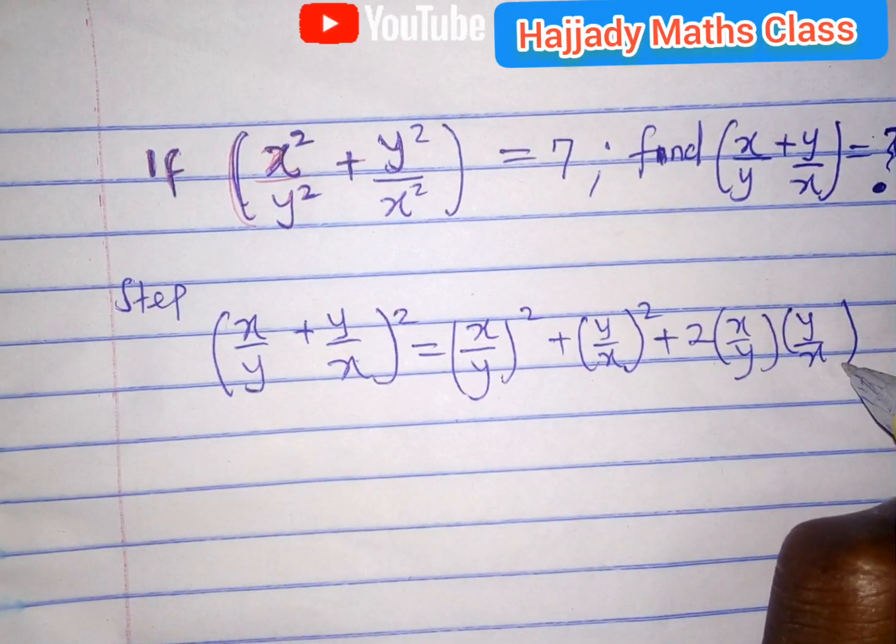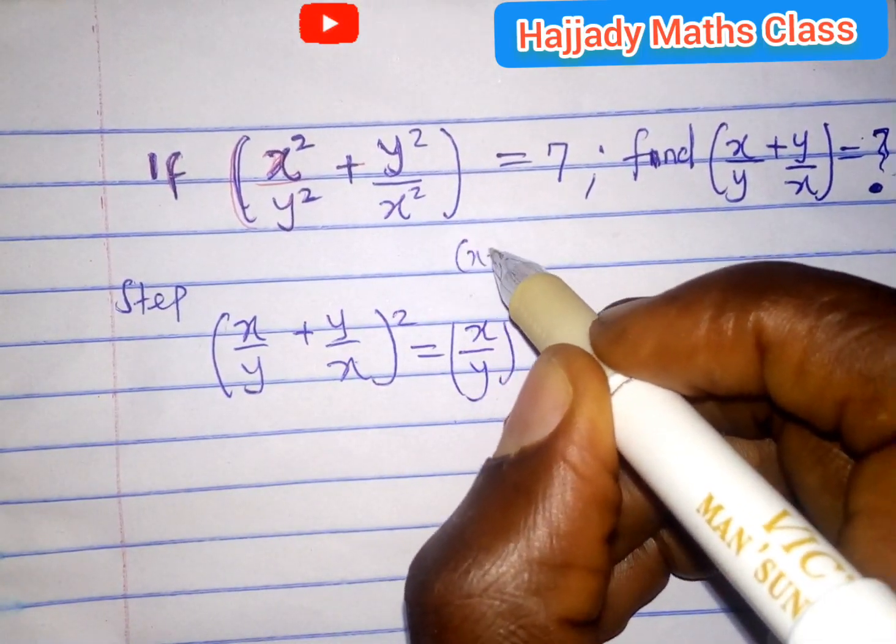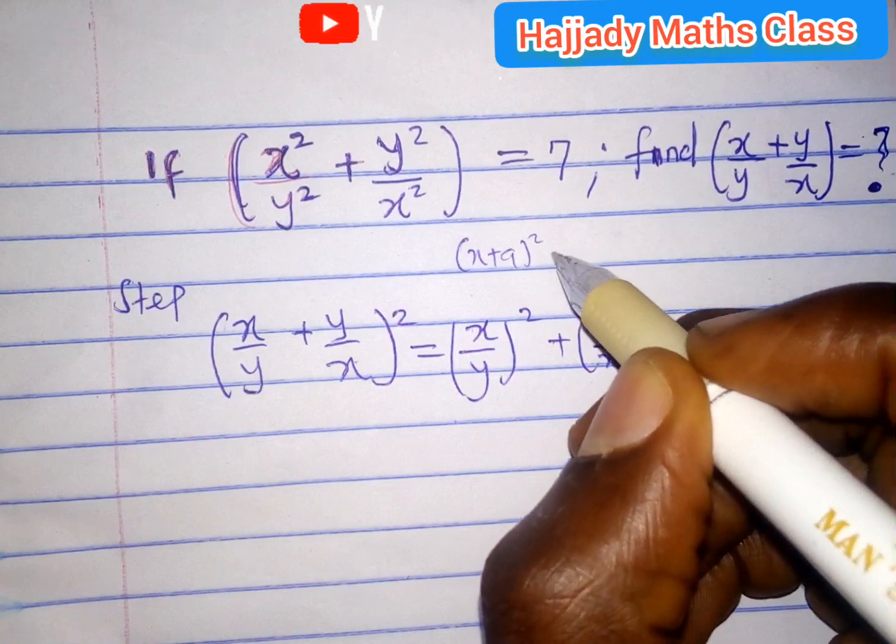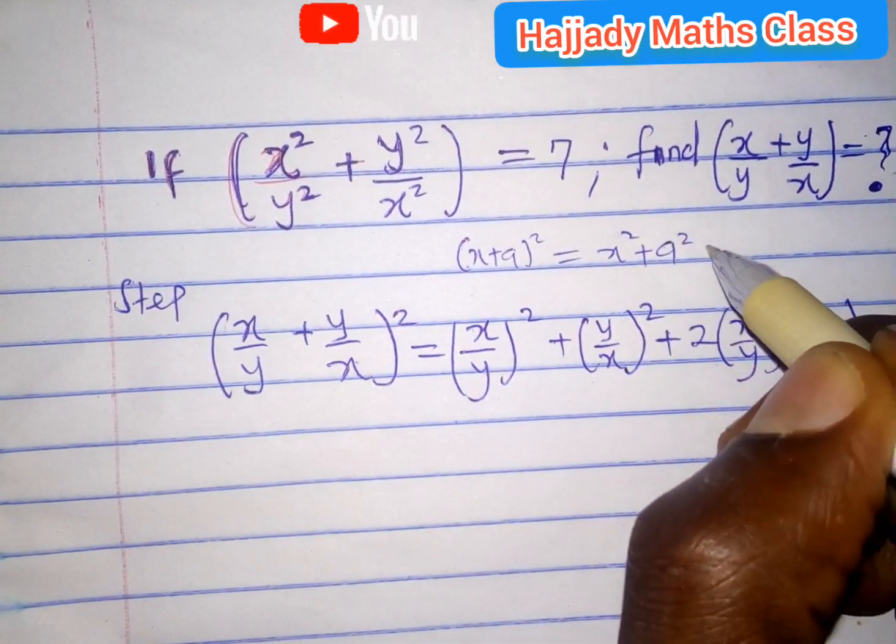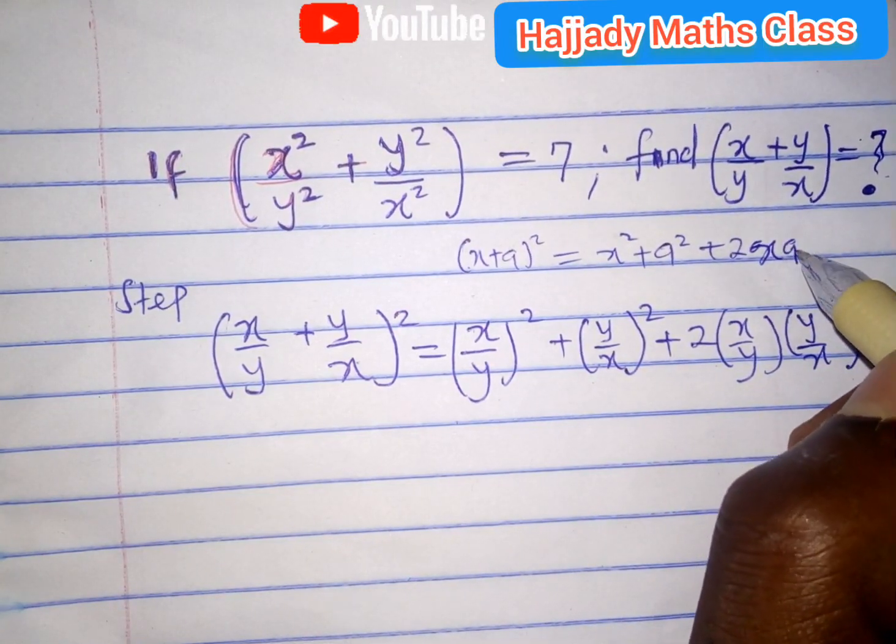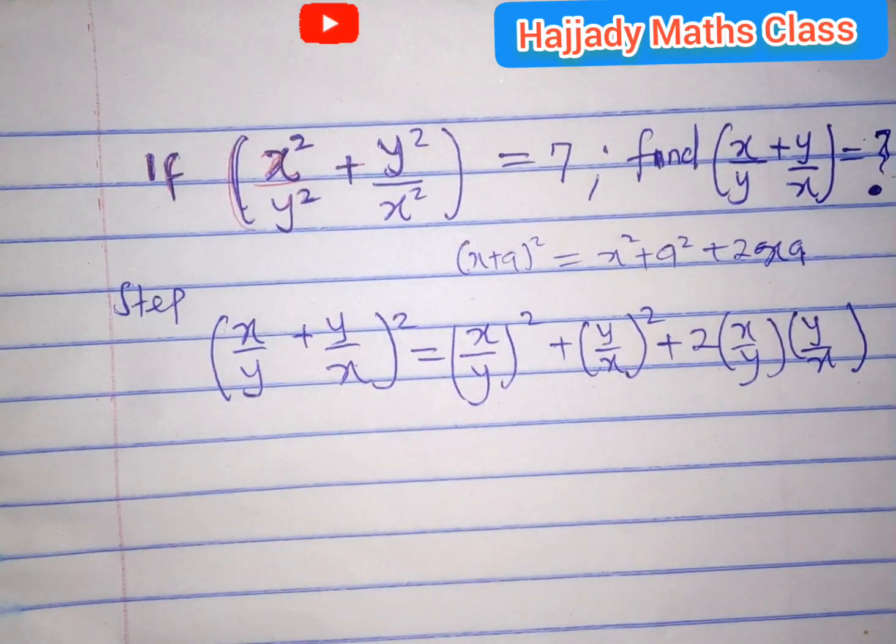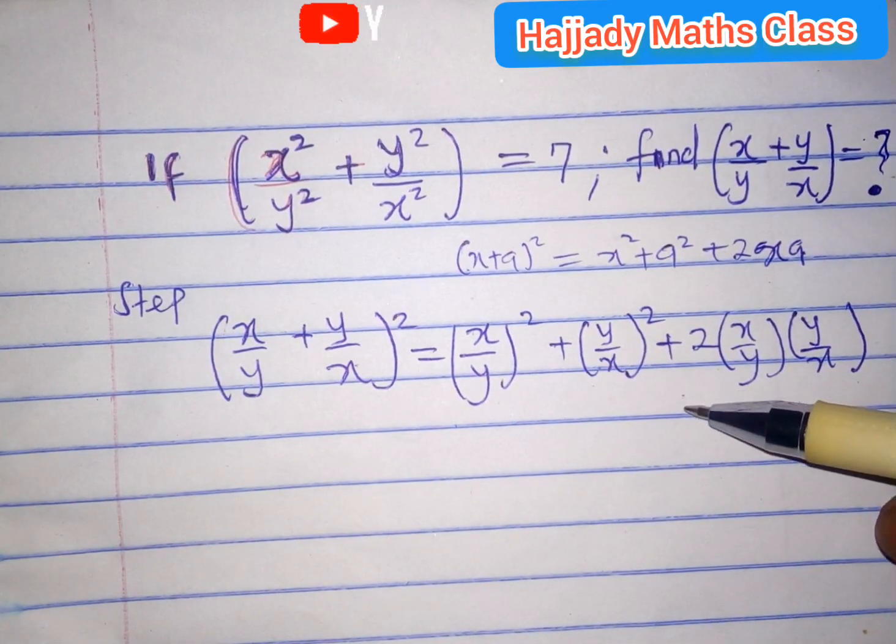The method used in this is when we have x plus a all squared. Don't forget, this is the same as x squared plus a squared plus 2 times x times a. So that is the short method for expansion. So that was the same thing that was applied here.